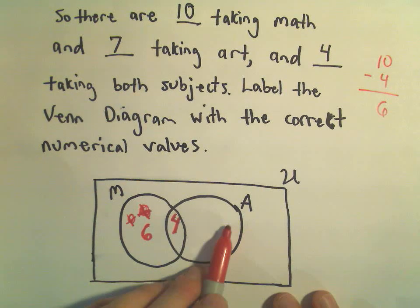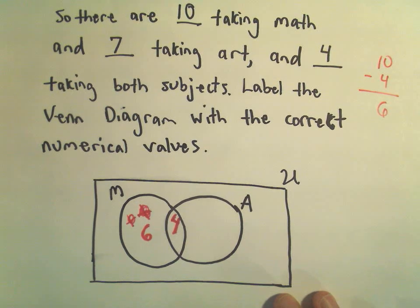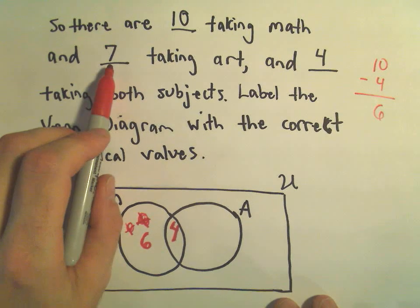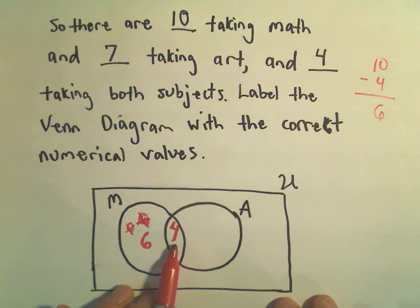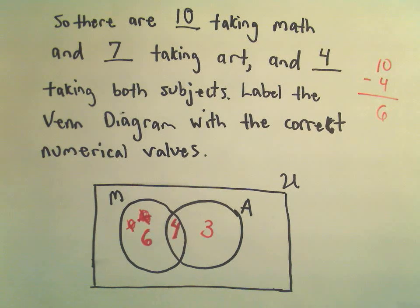What number would need to go in the A circle that's outside of the M circle? Well, we said there's seven people taking art, but we've already accounted for four of those people, which means there must be three people that are taking art only.